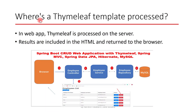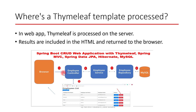Where are Thymeleaf templates processed? In typical web applications, Thymeleaf is processed on the server side. The server returns an HTML page that is then rendered in the browser. In a Spring MVC web application, when we hit a link in a browser, the request first comes to the controller. The Spring MVC controller processes the request, creates a model with data, and returns a view — that is, the HTML page or Thymeleaf template — which is then rendered in the browser with the model data.